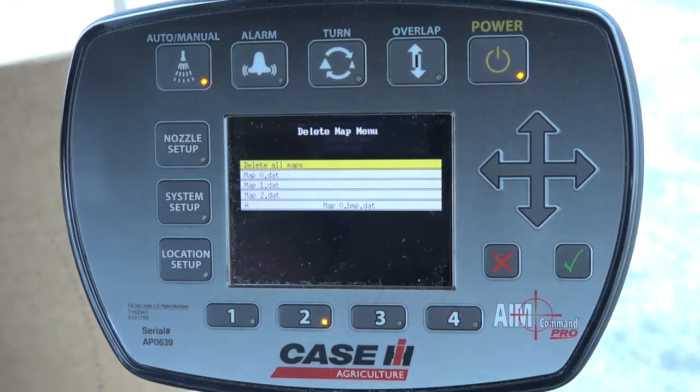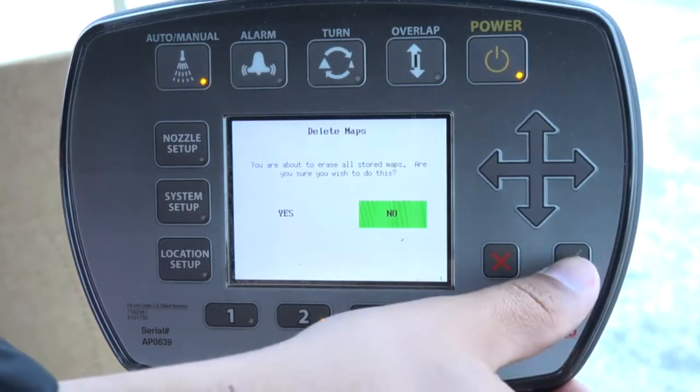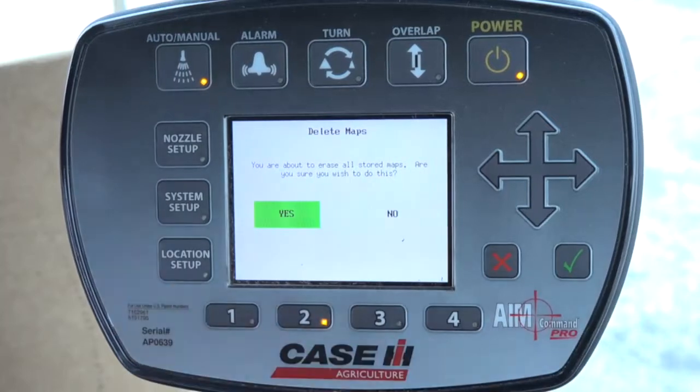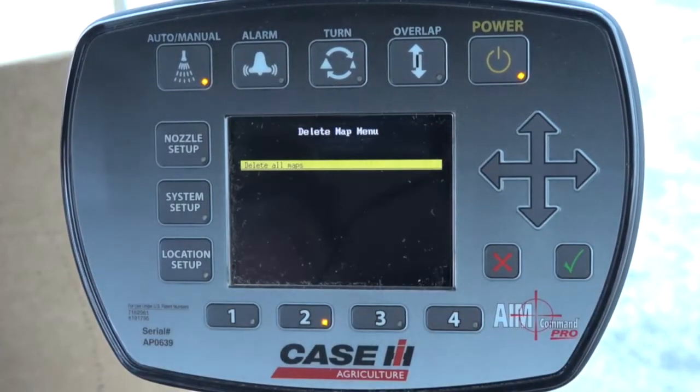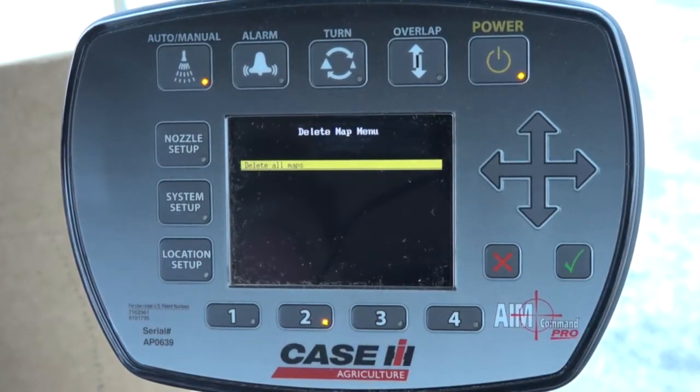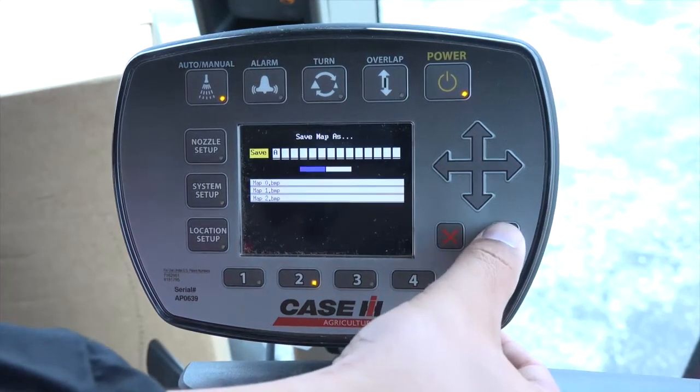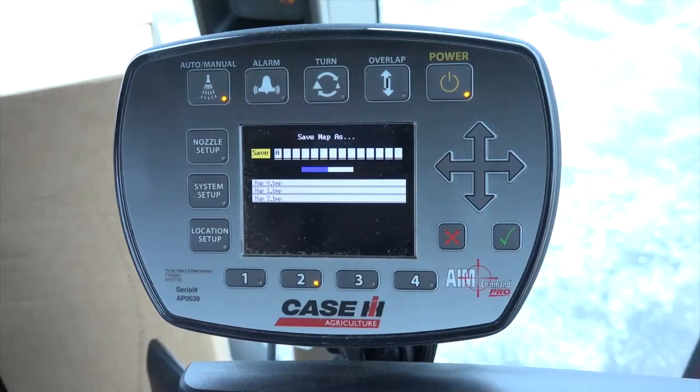If the field is finished, we should delete the map. That way, only the active jobs are going to be in the display. If the operator leaves before the field is finished, these maps can be named to match a field name or a job name so they can be easily referenced and pulled up later.